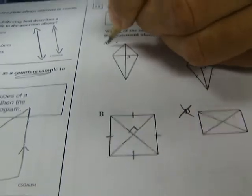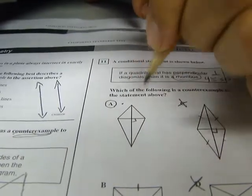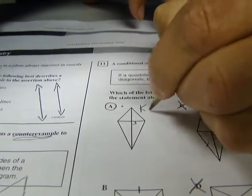leaving A as the only one that does have perpendicular diagonals but is not a rhombus. It is, in fact, a kite. Okay. Next. Number 12.